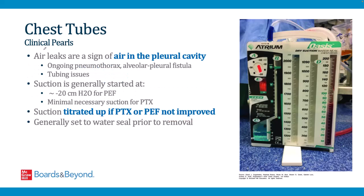Clinical pearls about chest tubes: Air leaks may indicate an ongoing pneumothorax or an alveolar-pleural fistula; always check the tubing if an air leak is present, as it may be entering through the tubing or canister. Suction is generally started at negative 20 cm of water for pleural effusions and the minimum necessary for pneumothorax. If not improving, uptitrate suction; as the condition improves, decrease suction and ultimately set to water seal prior to removal of the tube.